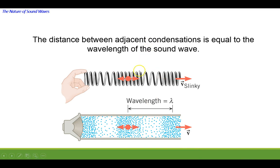Just like with the spring, if you take two adjacent areas, for example a compression and a compression, the same thing would be true here, that would be a wavelength. So a wavelength is the distance between two adjacent condensations or two adjacent rarefactions.